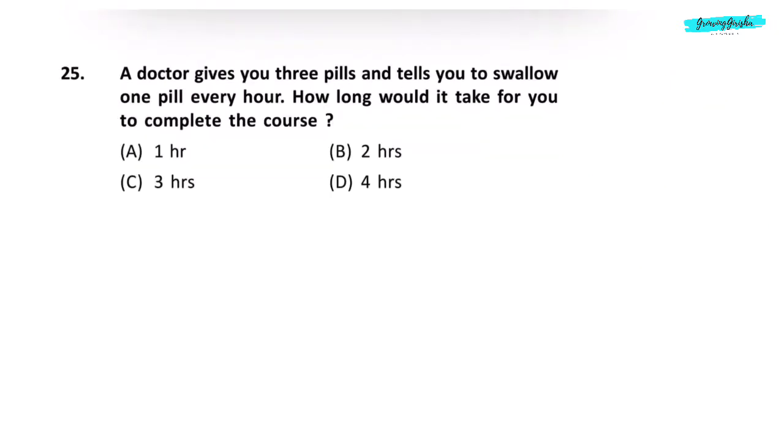Question 25. A doctor gives you three pills and tells you to swallow one pill every hour. How long would it take for you to complete the course? There are three pills. You take the first one at 12, second pill at 1, and the third pill at 2. So 12 to 1 is 1 hour, 1 to 2 is 2 hours. So the course would be completed in 2 hours. Correct answer is option B.